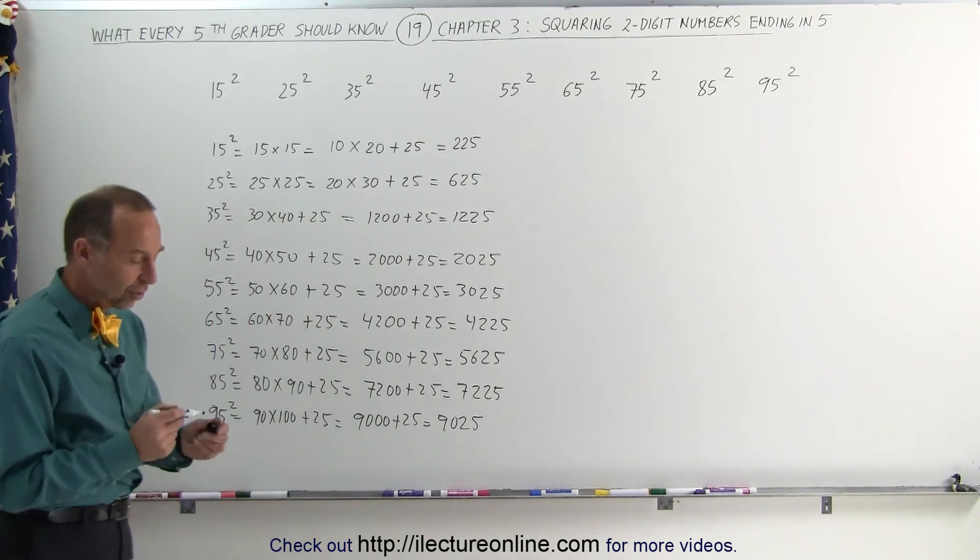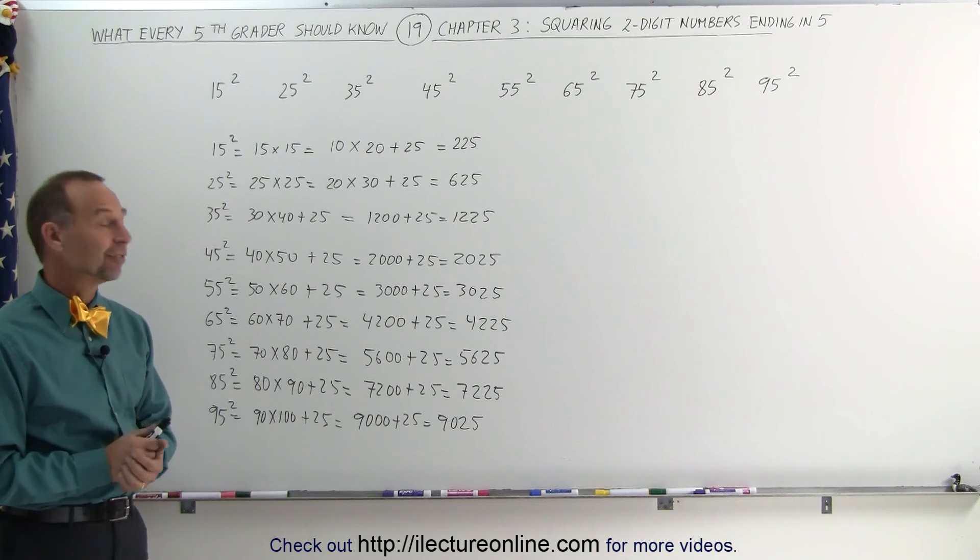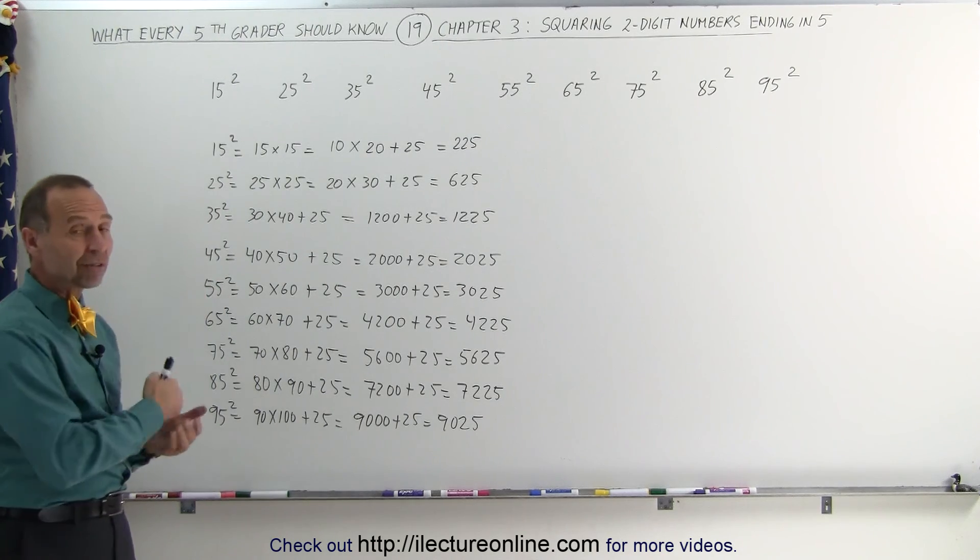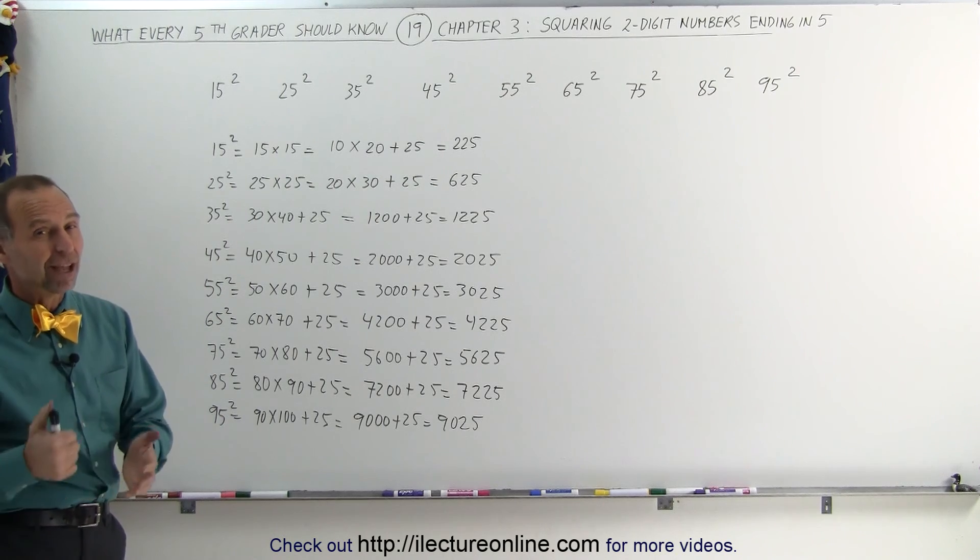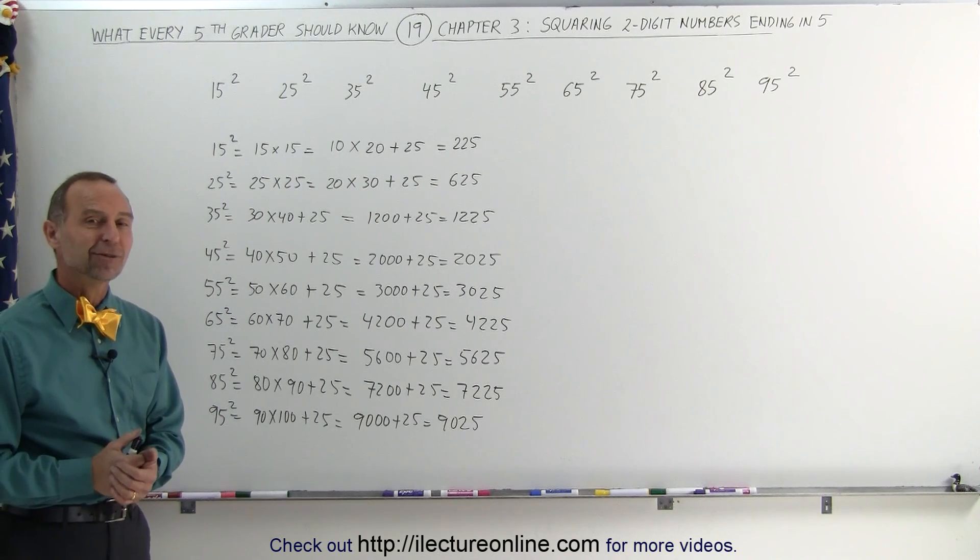See how easy it is to square a two-digit number that ends in a 5. Simply add 5, subtract 5, multiply together, add 25, and you get the result very quickly. And that's how it's done.